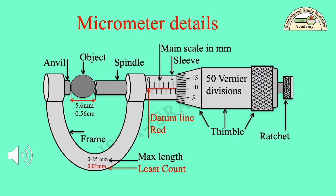Look at the details of the Micrometer Screw Gauge diagram. You can see an object between the anvil and spindle. The anvil is fixed with its frame, where the spindle works like a screw which can be moved forward or backward when the thimble is rotated clockwise or counter-clockwise respectively.